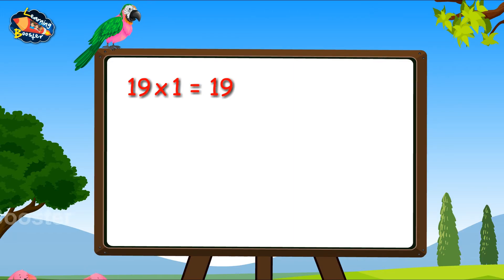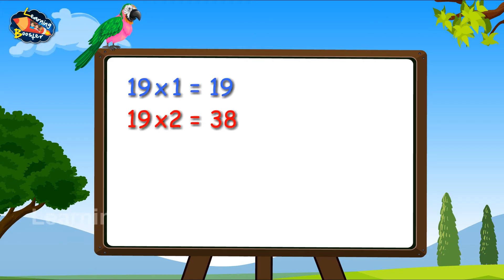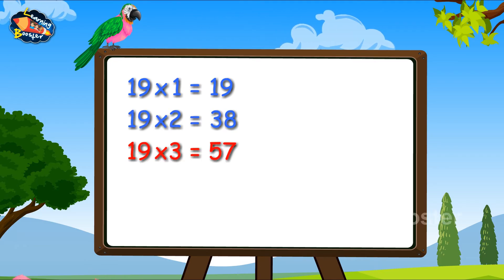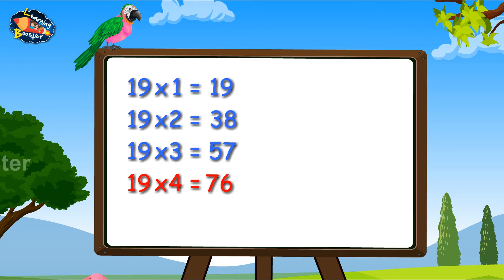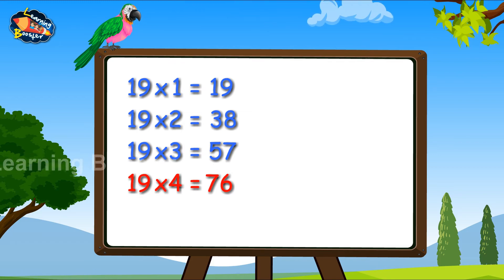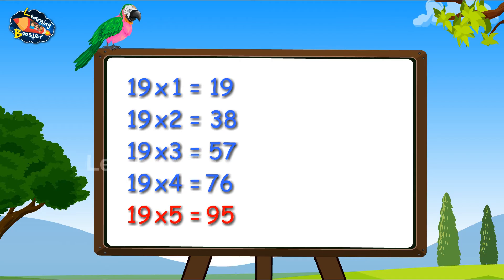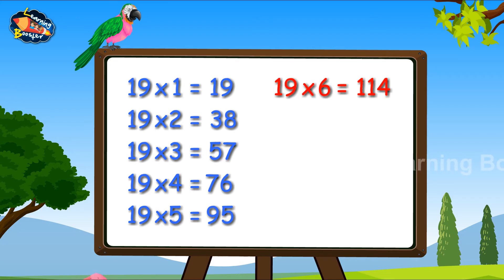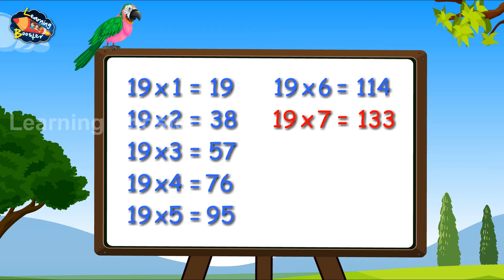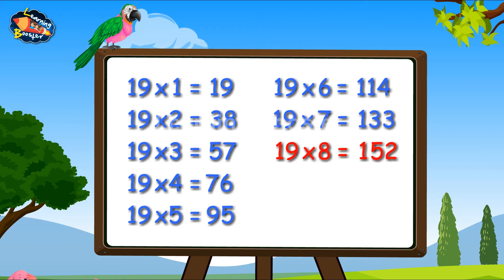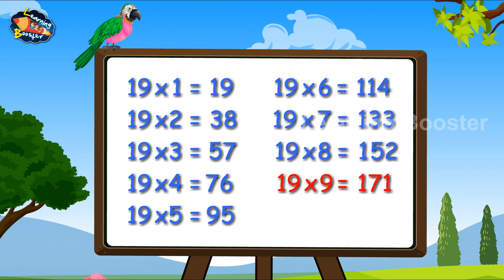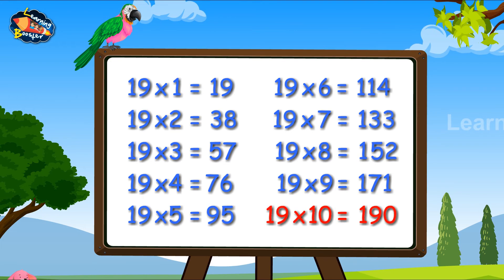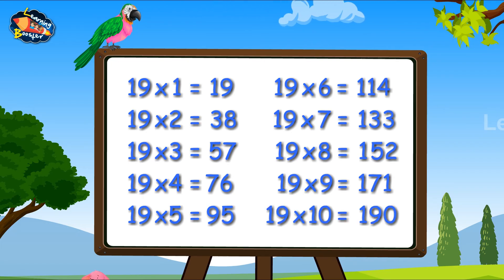19 1s are 19. 19 2s are 38. 19 3s are 57. 19 4s are 76. 19 5s are 95. 19 6s are 114. 19 7s are 133. 19 8s are 152. 19 9s are 171. 19 10s are 190.